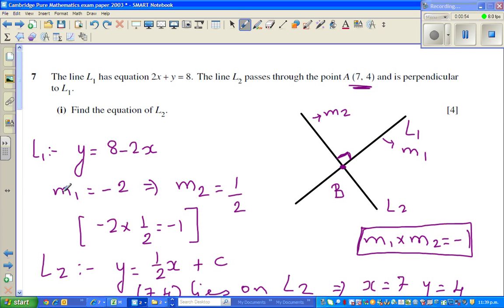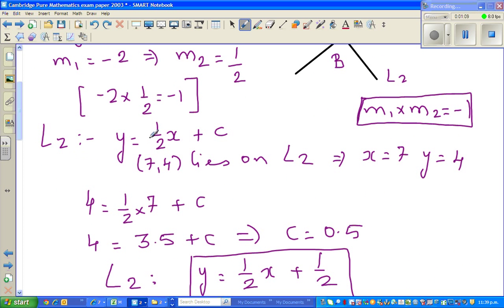So we say that L1 has a gradient of M1. So if M1 is negative 2, M2, which is a gradient of L2, has to be half because half times negative 2 gives me 1. So then I said, okay, then L2 has to be half plus C.